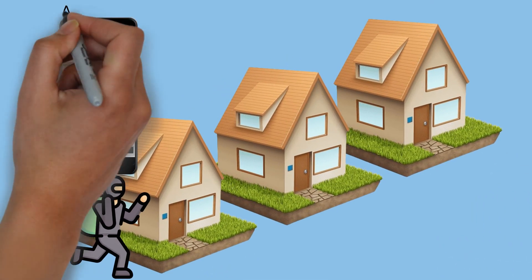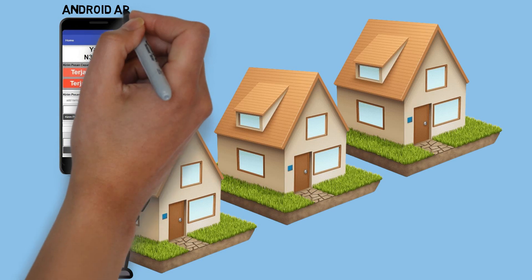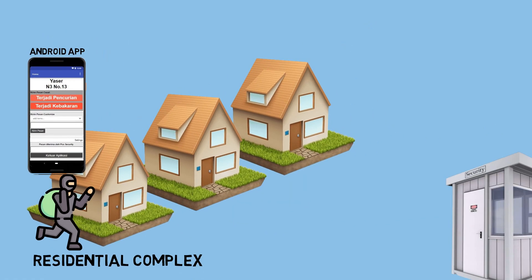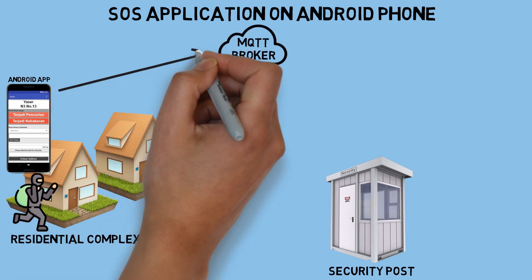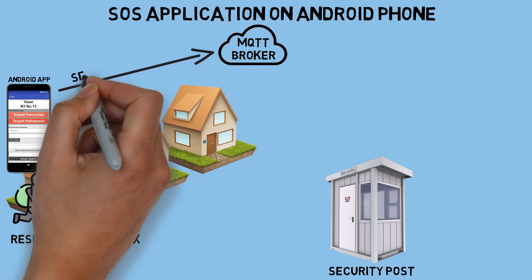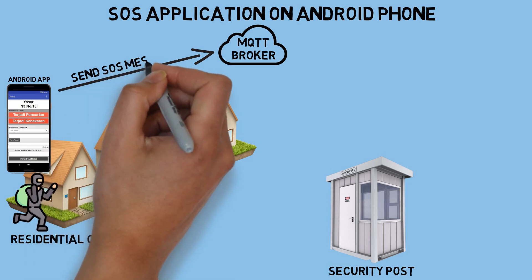Therefore, residents who know of such incidents can promptly send this theft information to the security post using an installed Android application. The SOS message from the Android application will be sent to an MQTT broker, which will then be received by the devices at the security post.